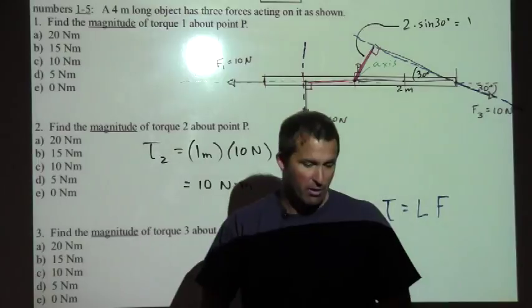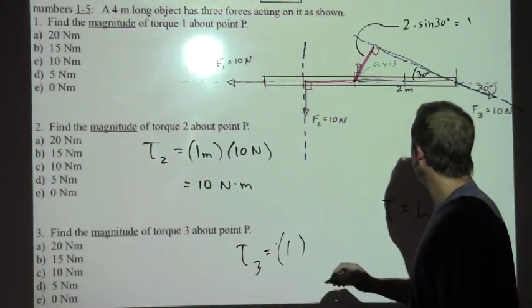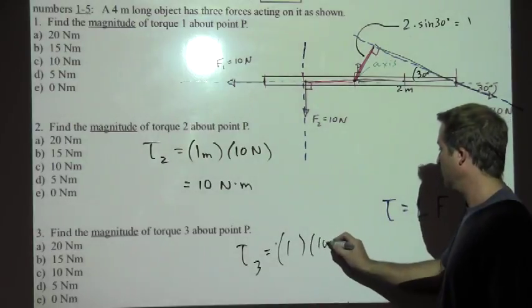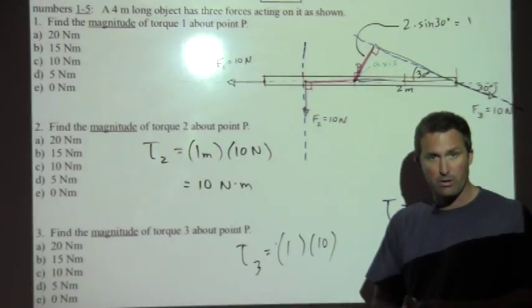And so that lever arm distance is also one. And so torque three equals one meter. And again, that's also ten newtons. So ten newton meters also for the torque due to force three.